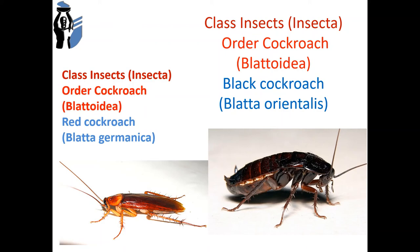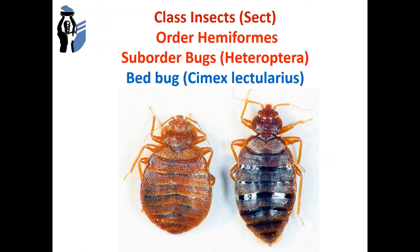Class Insecta, order Hemiptera, suborder bugs — species bed bug and kissing bug. Bugs are blood-sucking insects that live in human houses, in cracks in walls, behind wallpaper, and in furniture. There are 20 species of microorganisms — pathogens of diseases — found in their intestine. To kill cockroaches and bugs, places of their accumulation are treated with various insecticides.